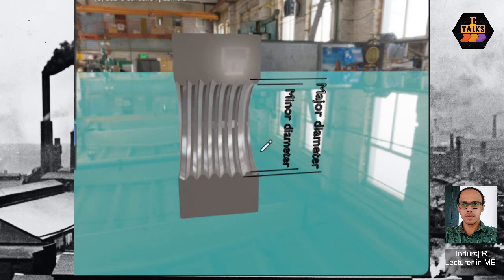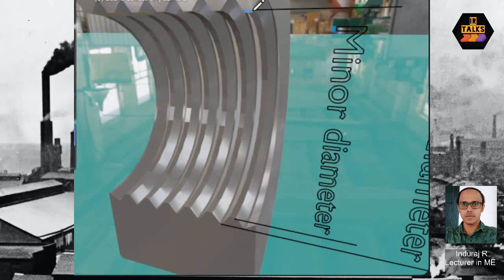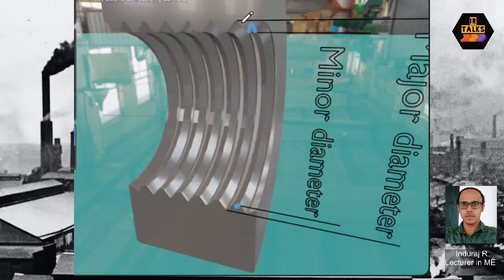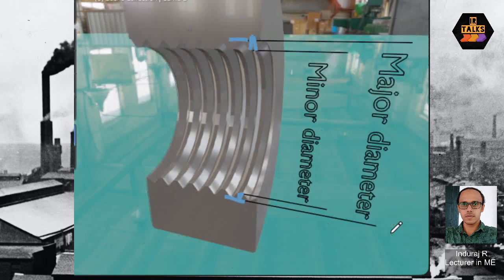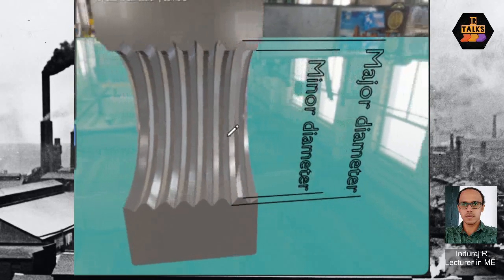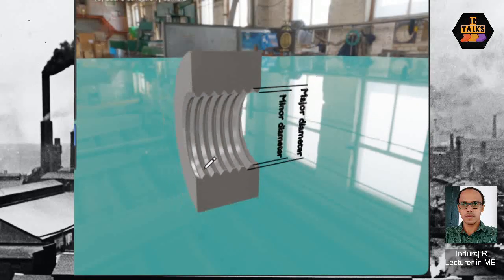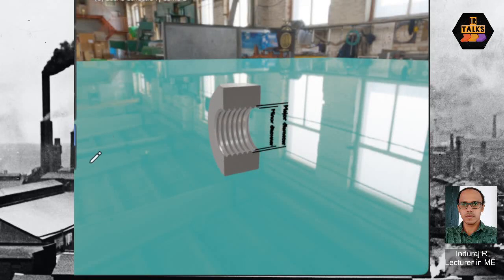In the section view, major diameter and minor diameter are shown. For internal thread, the crest becomes the root. The minor diameter corresponds to the crest of the internal thread, and the major diameter corresponds to the root of the internal thread.